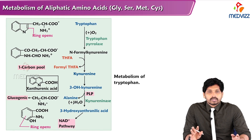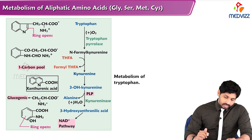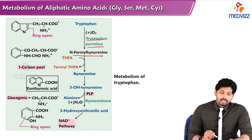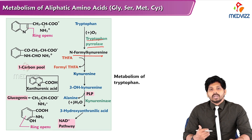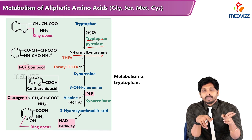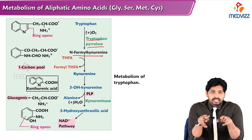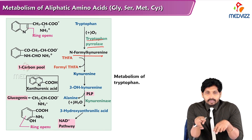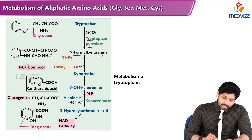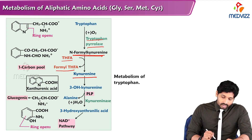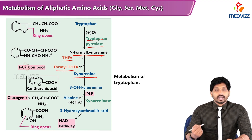There are two pathways based on the products formed. First, tryptophan undergoes ring opening to form N-formylkynurenine via tryptophan pyrrolase. Then there are two pathways: the kynurenine pathway and the NAD+ pathway. The conversion of tryptophan to N-formylkynurenine requires tetrahydrofolic acid to form formyl-tetrahydrofolate, yielding kynurenine.